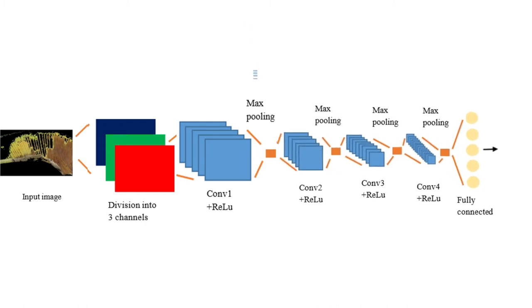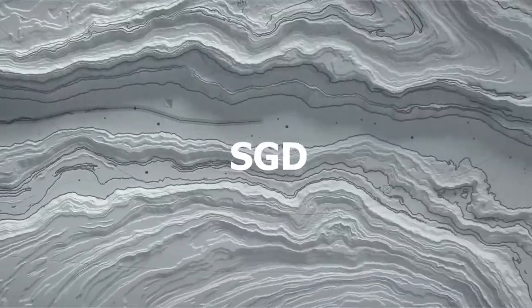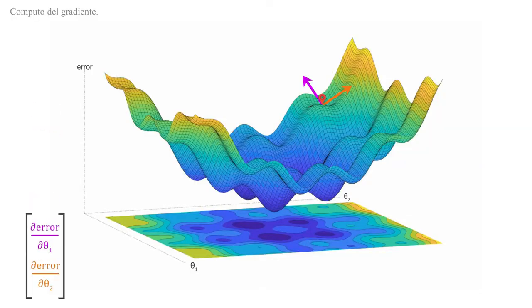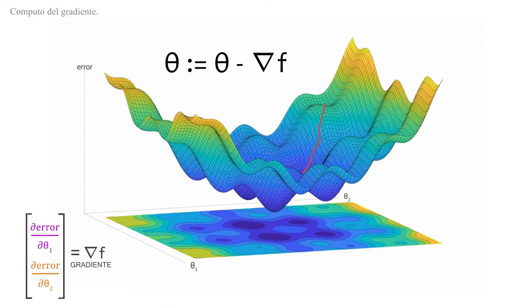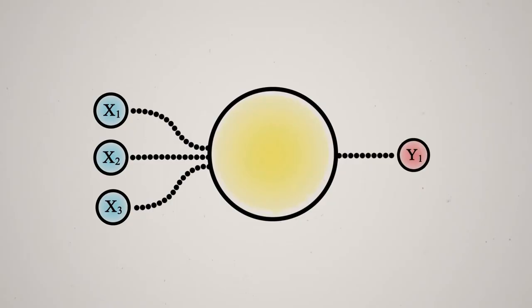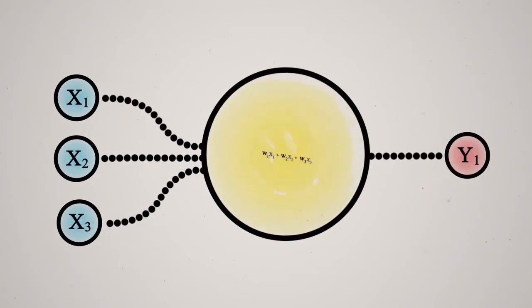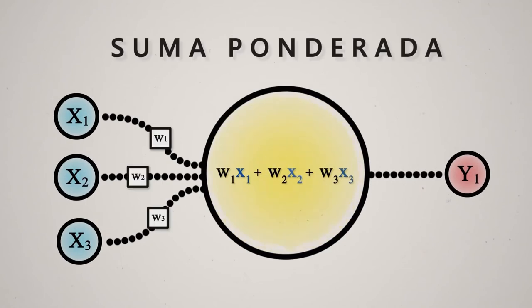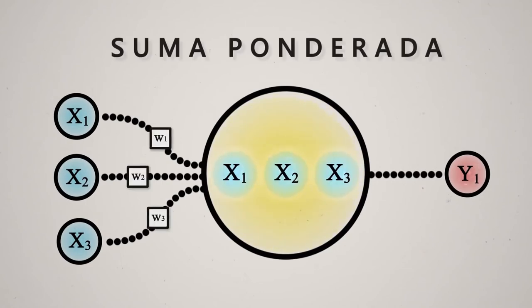Finally, it has a fully connected layer with 512 neurons and the softmax activation function in the output layer. The stochastic gradient descent was used as an optimizer for its efficiency and ease of implementation. The loss function was cross-entropy, which allows determining the best learning path for the network.